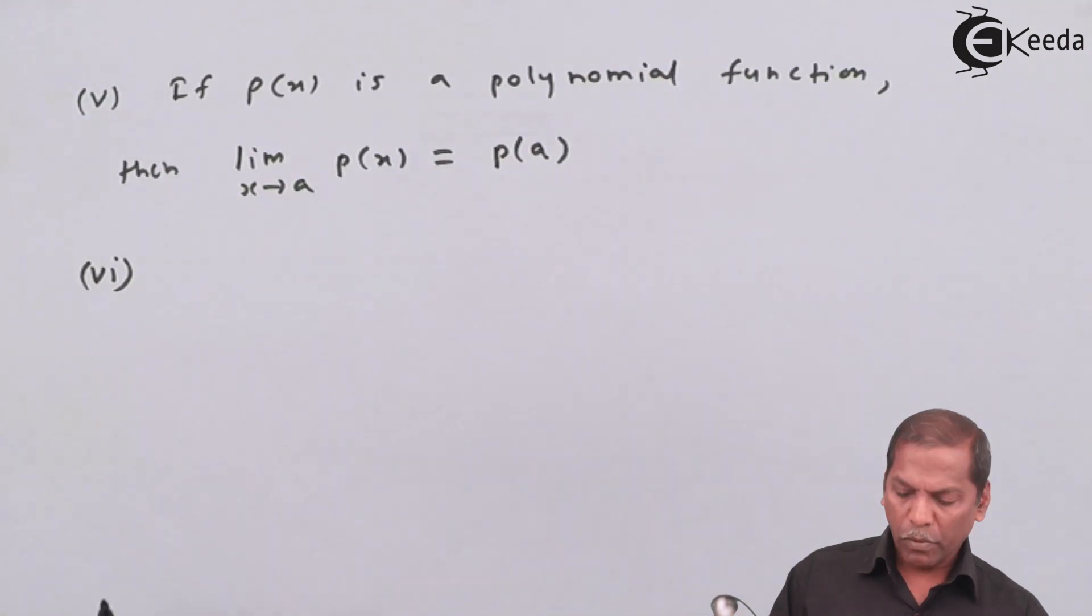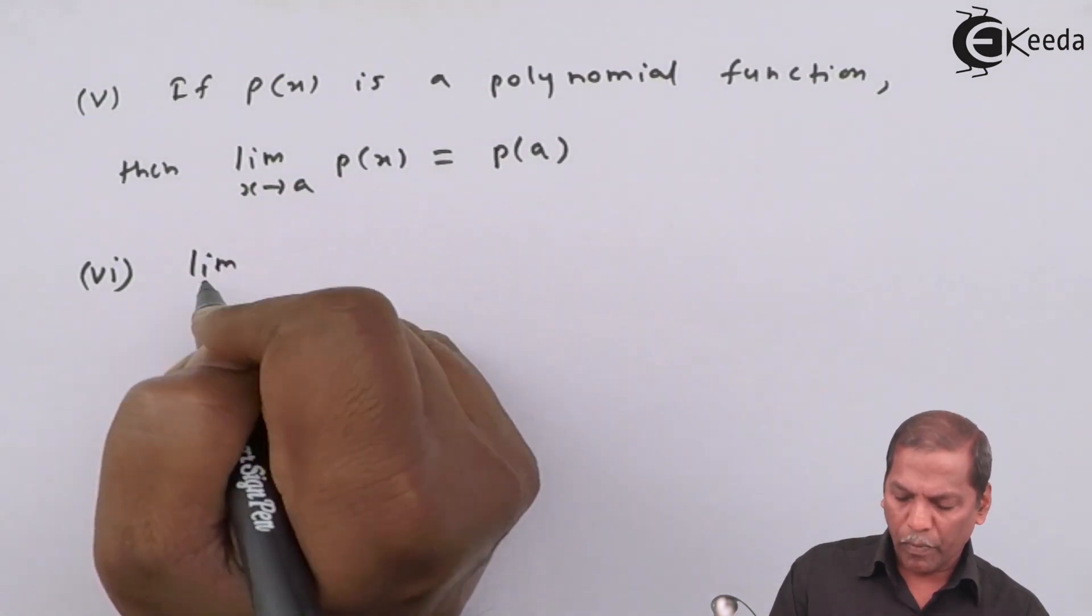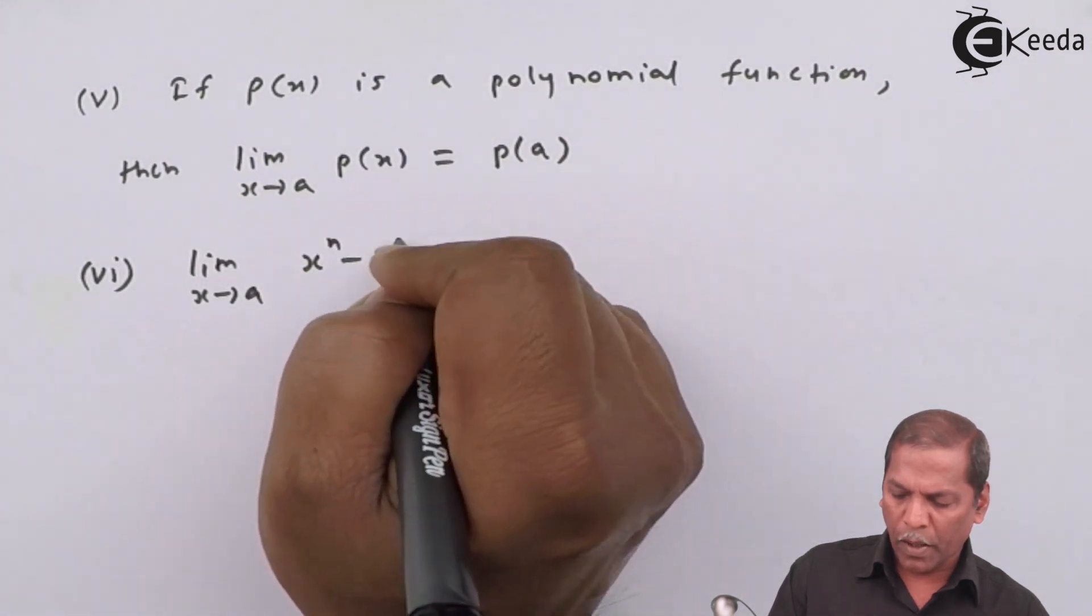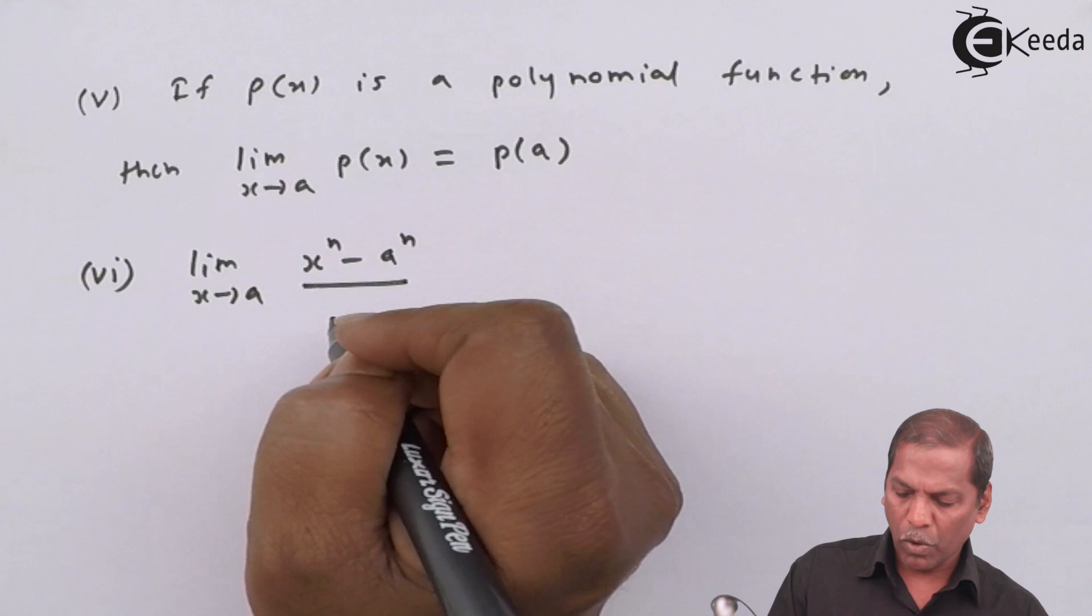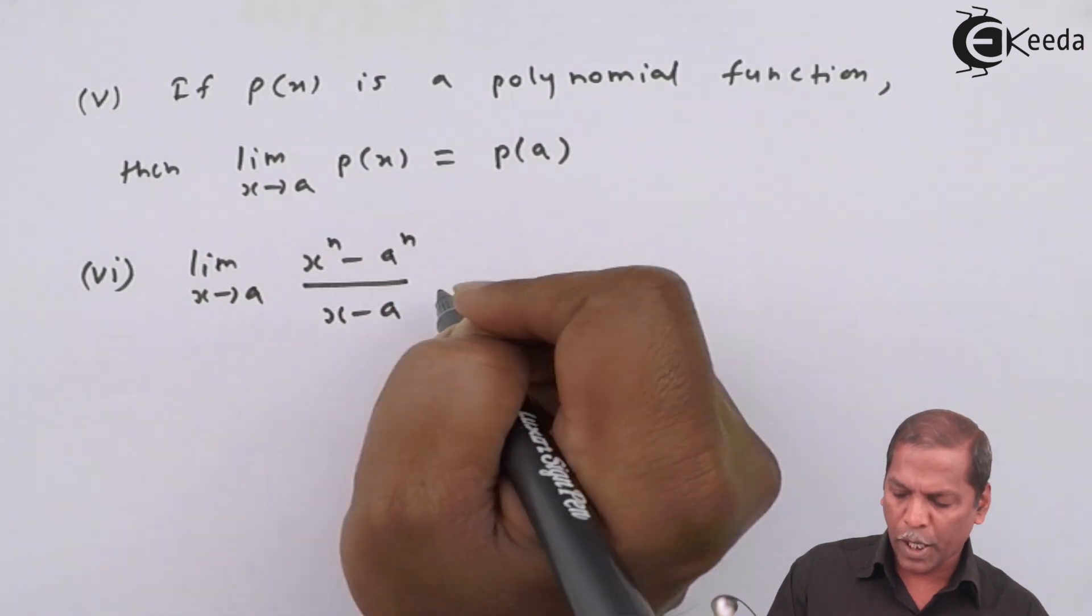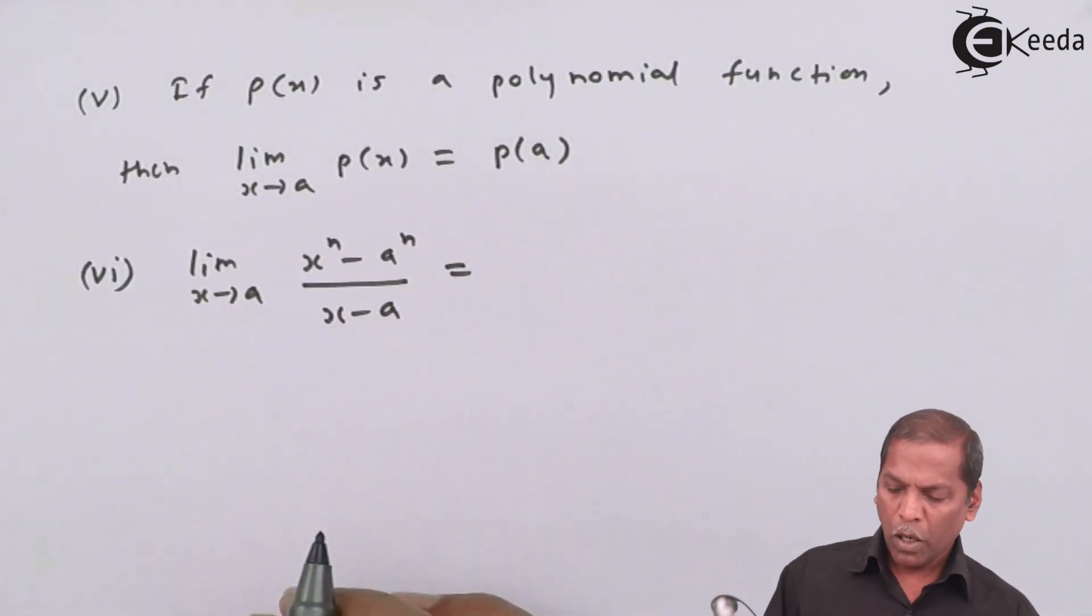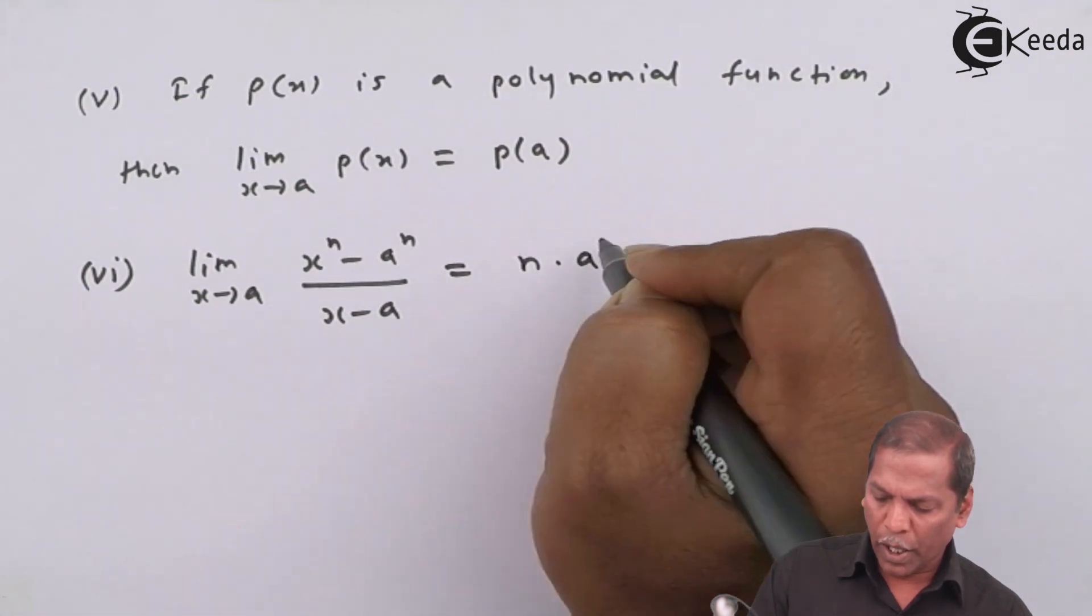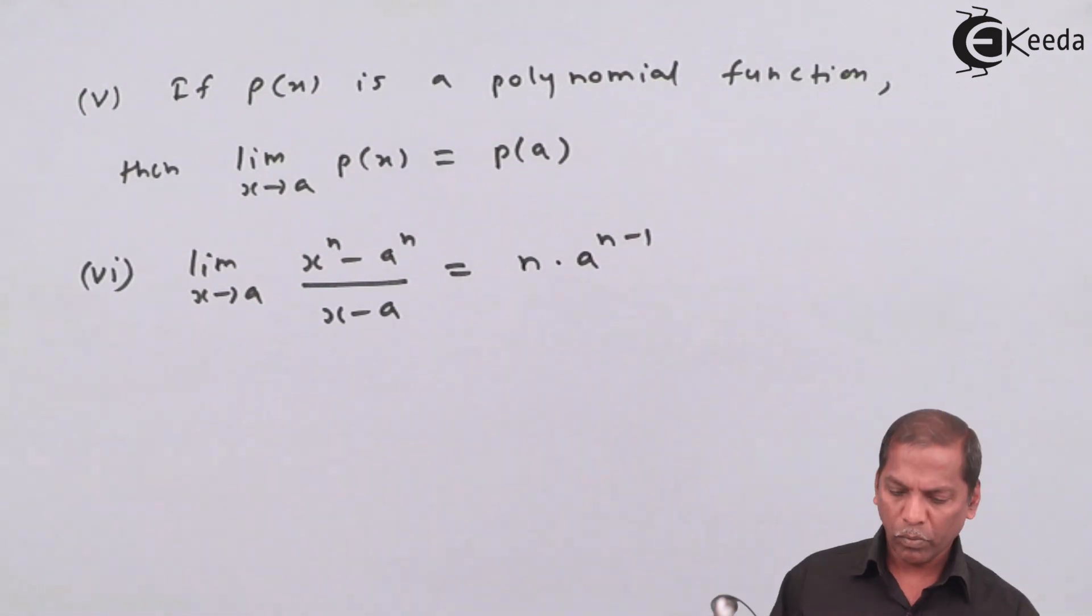Number six: limit x approaches a of (x raise n minus a raise n) divided by (x minus a).